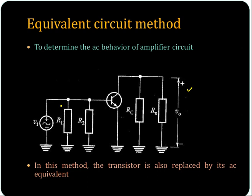The coupling capacitors are shorted, as well as the emitter side capacitor, which is also considered to be shorted for AC input. In this method, the transistor is also replaced by its AC equivalent. Let us see how to find the AC equivalent of this transistor.